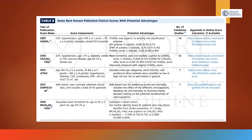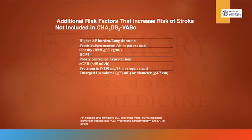Additional risk factors not included in CHA2DS2-VASc but worth considering when evaluating candidates for oral anticoagulation include: higher AFib burden and longer duration, persistent or permanent AFib versus paroxysmal, obesity, history of HCM, poorly controlled hypertension, low or poor renal function, proteinuria, and enlarged left atrial volume.